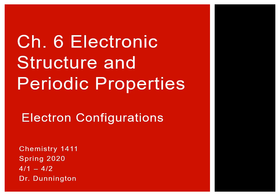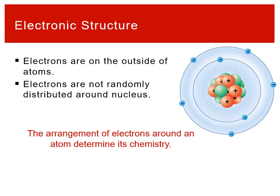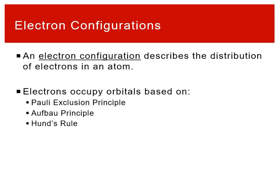Today we want to start talking about electron configurations. We know that the electrons are on the outside of the atom around the nucleus, and they're not random. Last time we talked about the idea that there were these quantum states, particular orbitals, that the electrons needed to always be assigned to.